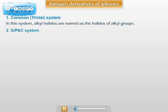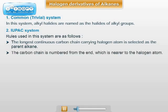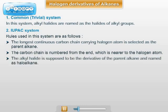In the IUPAC system, the following rules are followed. Rule number one: the longest continuous carbon chain containing the halogen atom is selected as the parent alkane. Rule number two: the carbon chain is numbered from that end which is nearer to the halogen atom. Rule number three: the alkyl halide is considered to be the derivative of the parent alkane and named as haloalkane.